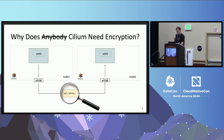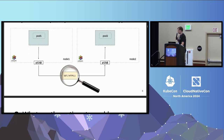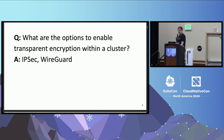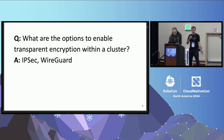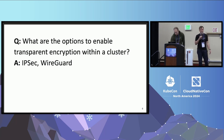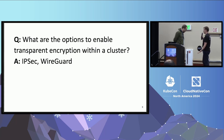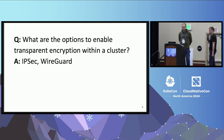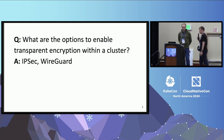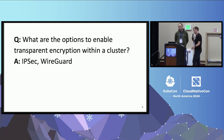Transparent encryption means that we enable it once for the whole cluster, and then applications — without any configuration, without any change to applications — their traffic will be encrypted. For doing this on a CNI level, there are not actually too many options: it's IPSec and WireGuard.